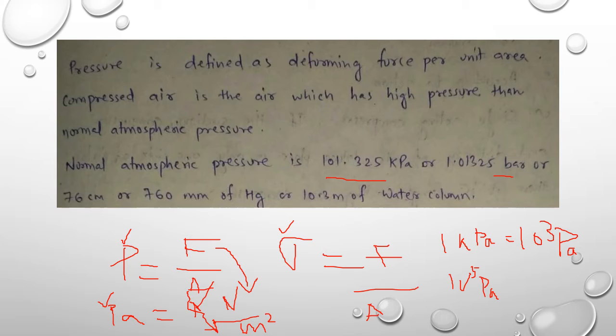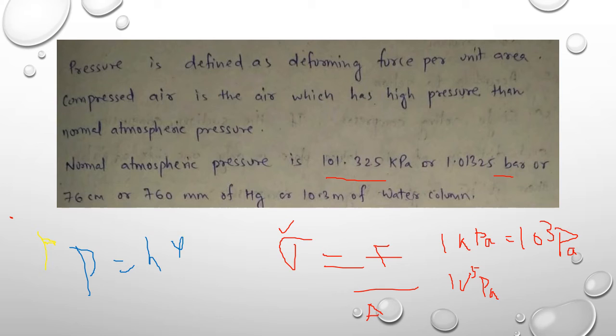If we look onto the height of the liquid, since we have the formula P equals h rho g, we can find this height in terms of any liquid with a density. So if I consider mercury, the height is found to be 76 cm, 760 mm or 10.3 meter of water.